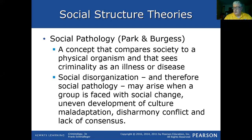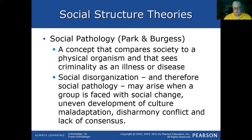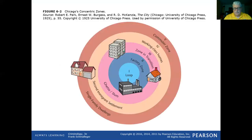Park and Burgess looked at cities in terms of concentric zones — each zone had its own unique characteristics, unique populations, and typical forms of behavior. There are five concentric zones. This example is based upon Chicago, where the Loop is a built-up central area — similar to center city Philadelphia, where you have major office complexes and residences. Then you have the factory zone, with examples just north of center city where there were a great many factories.